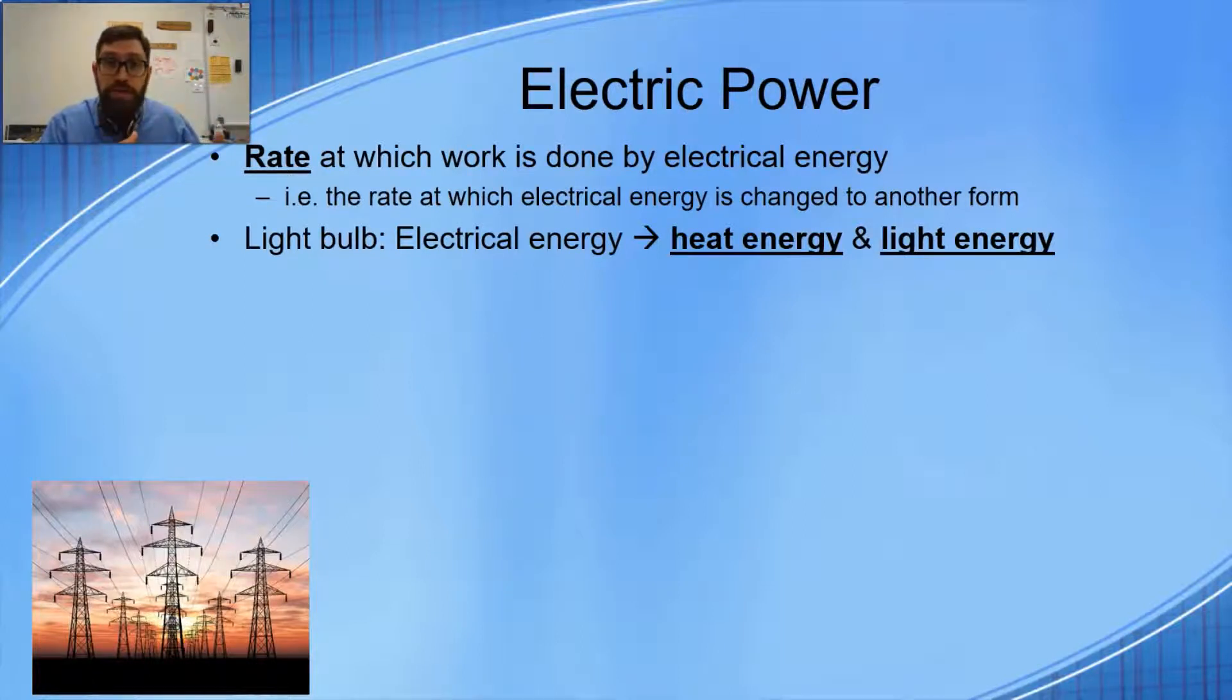And so the power of that bulb - 60 watts, 75 watts - those used to be incandescent bulbs. Now they're more like 13, 17, 25, 21 watts. The power of that bulb tells us how fast this transformation is taking place, which in turn tells us about the brightness of the bulb. The faster electrical energy is being transformed to heat and light, really light, the brighter the bulb is going to be.